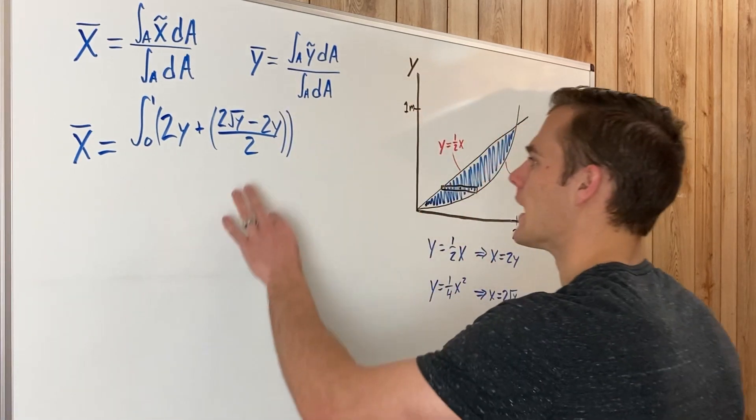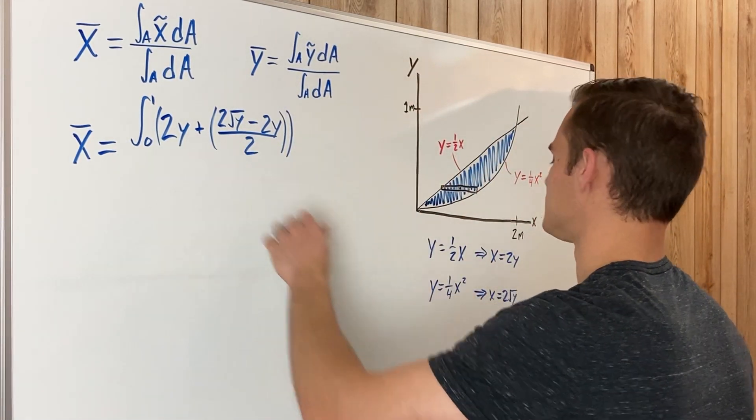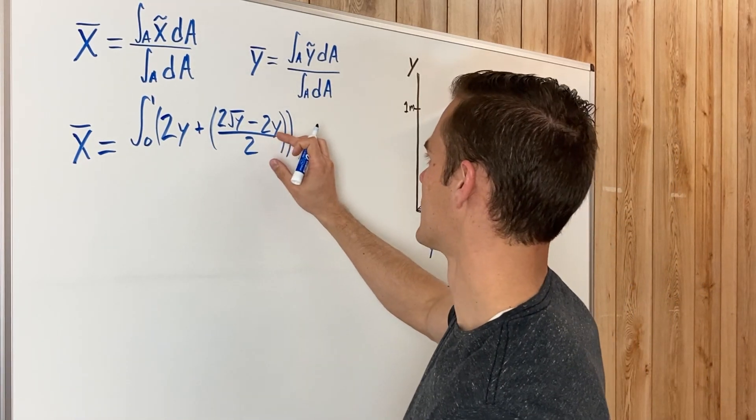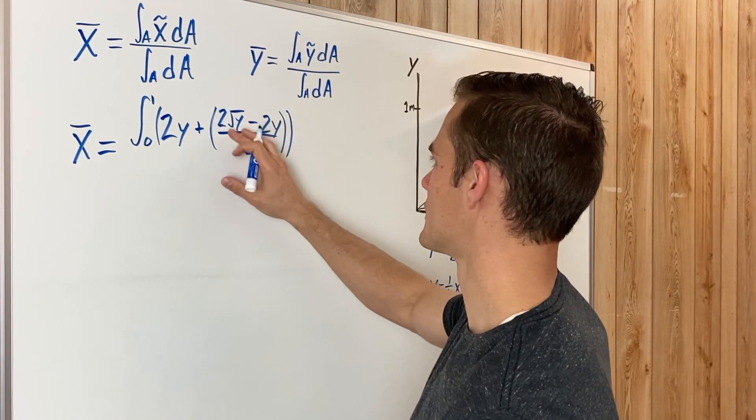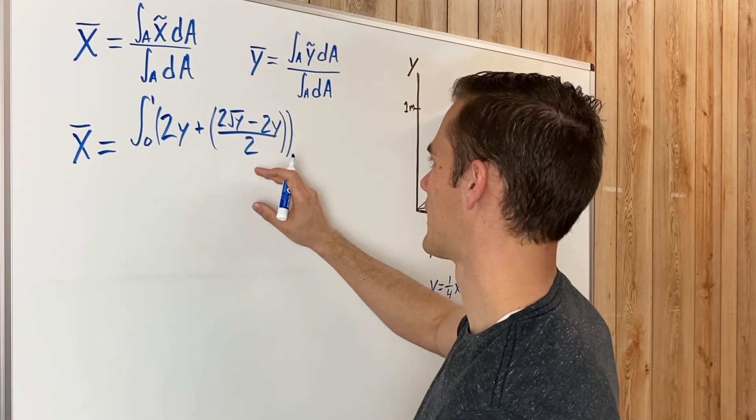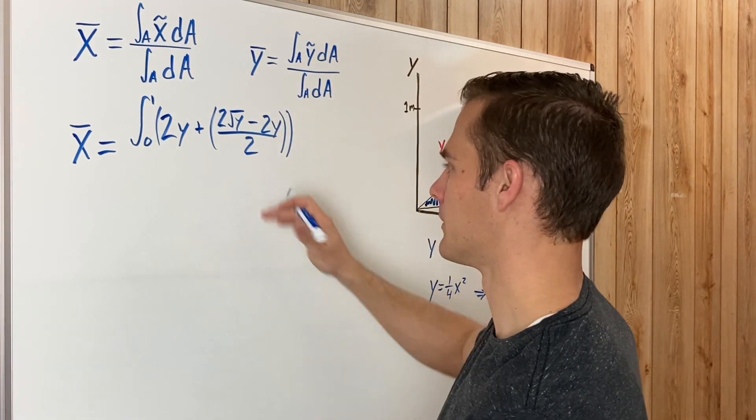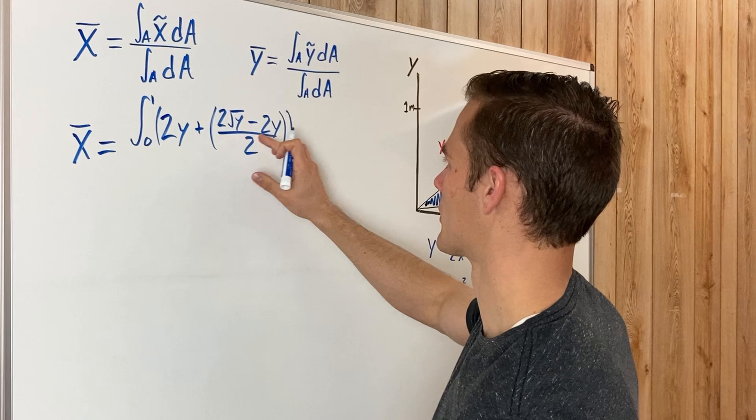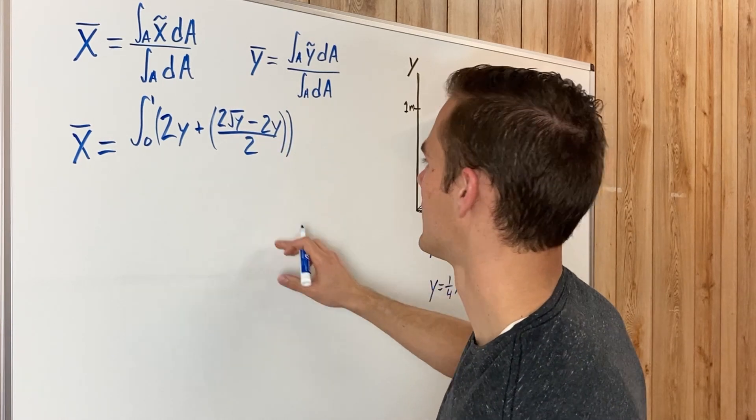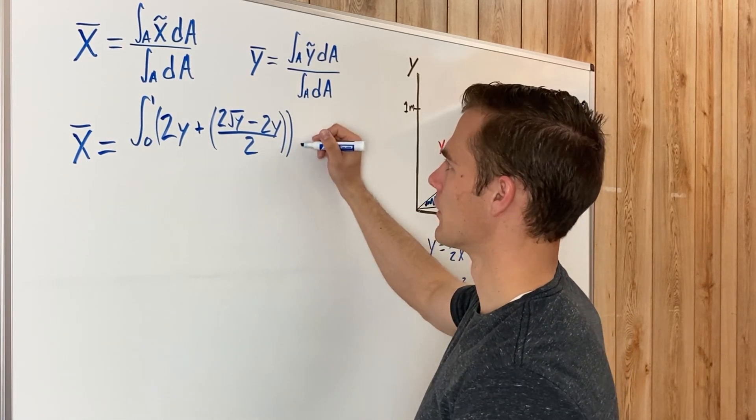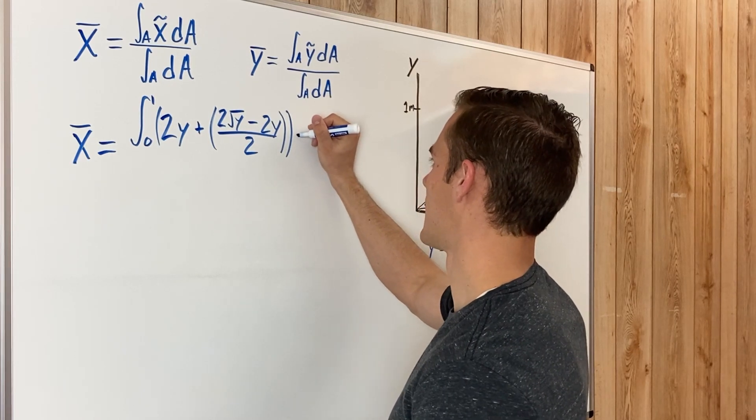And like we said, that is the top function, two square root of Y, minus the bottom function, two Y, divided by two. So that is going to be our X tilde. Now if you'll notice, these twos all cancel each other out, so we're just going to end up being left with square root of Y minus Y.